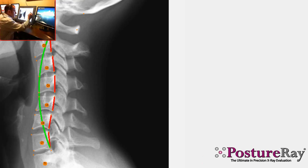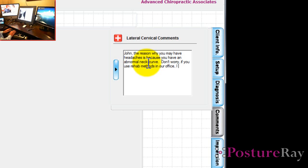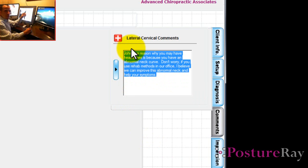Next, if we want to educate the patient, let's put a note in here for the patient. This will show up on the report. I'm going to type in: John, the reason why you may have headaches is because you have an abnormal neck curve. Don't worry, if you use rehab methods in our office, I believe we can improve this abnormal neck and help your symptoms. Whatever you type makes a life impact for the patient. This goes home with them. If you can relate it to their spinal subluxations, put it in there.